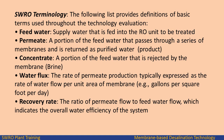Permeate: a portion of the feed water that passes through a series of membranes and is returned as purified water, also called product. Concentrate or brine: a portion of the feed water that is rejected by the membrane. Water flux: the rate of permeate production, typically expressed as the rate of water flow per unit area.